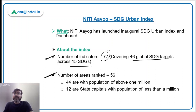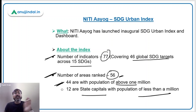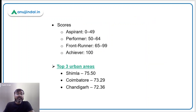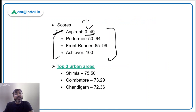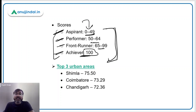The total number of urban areas ranked under this index is 56. Out of these 56, 44 have a population above 1 million, and the remaining 12 are state capitals with population less than 1 million. Regarding the scoring pattern, areas are scored as: 0–49 Aspirant, 50–64 Front Runner, 65–99 Achiever, and a score of 100 is the top category. This scheme is similar to all other SDG indices of NITI Aayog.